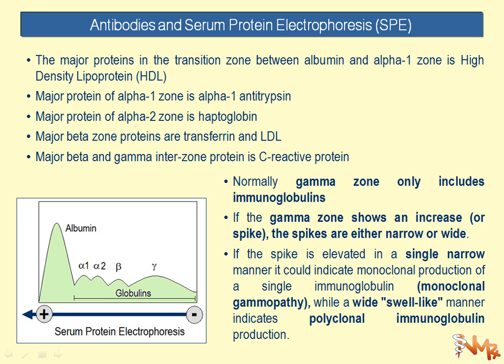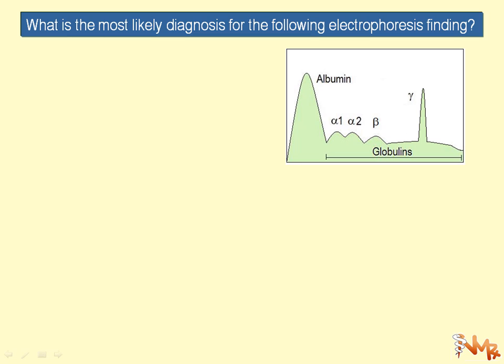Normally the gamma zone only includes immunoglobulins. If the gamma zone shows an increase or spike, it can be either narrow or wide. If the spike is elevated in a single narrow manner, it indicates monoclonal production of a single immunoglobulin — the technical term is monoclonal gammopathy. If there is a wide, swell-like increase, we have polyclonal immunoglobulin production, meaning more than one plasma cell is involved or the immunoglobulins are against more than one antigen.